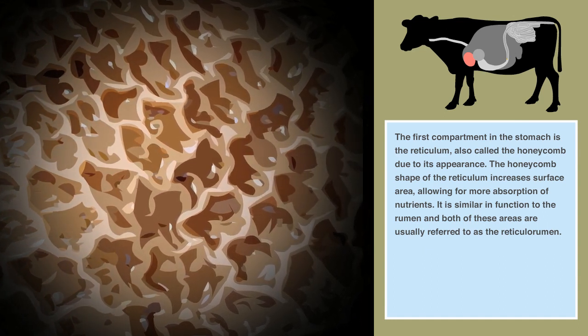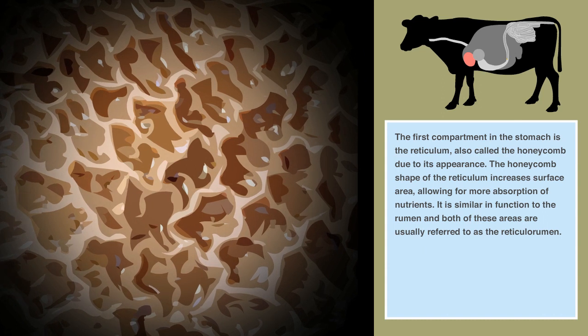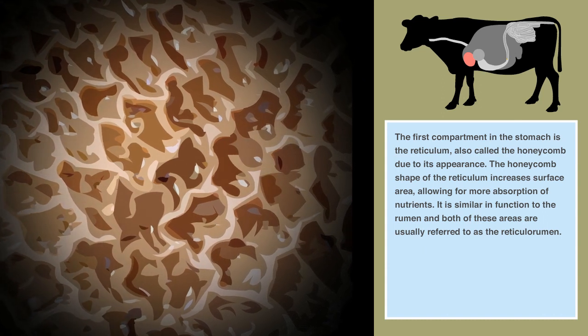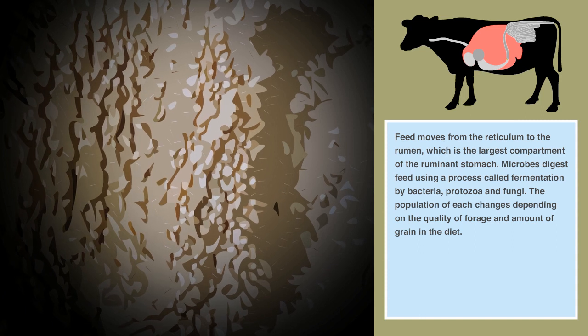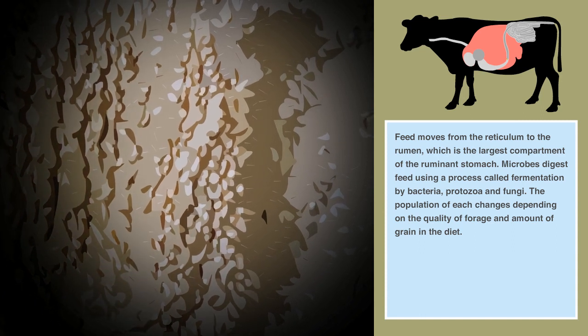It's similar in function to the rumen, and both of these areas are usually referred to as the reticulorumen. Feed moves from the reticulum to the rumen, which is the largest compartment of the ruminant stomach.